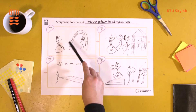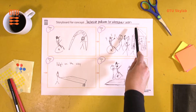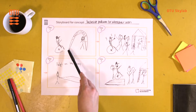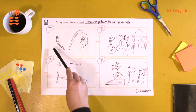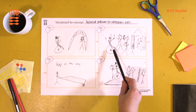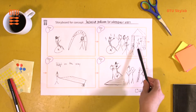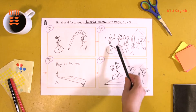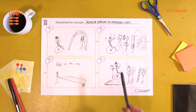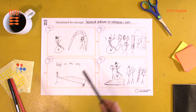For example, if your concept is an inclusive podium for wheelchair users at a festival or concert, the first step in the storyboard is the wheelchair user arriving at the festival. The second step illustrates the pain point of not being able to see the stage because they're not at the same height — in terms of line of sight towards the stage. That's where you've identified the pain.